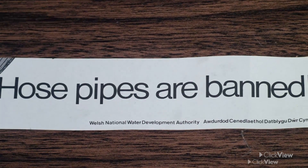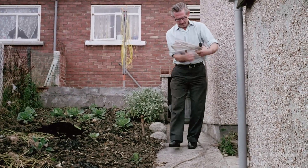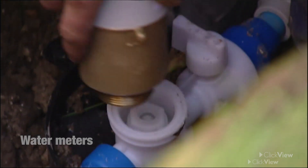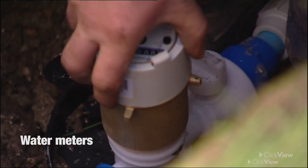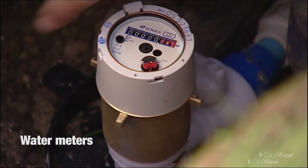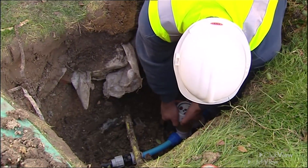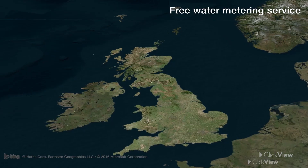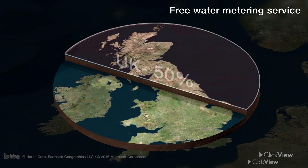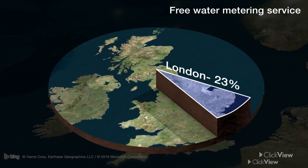Hosepipe bans have been used during periods of exceptionally low rainfall. It is difficult to tell how effective water restrictions are in the UK because they cannot be enforced, but it is always important to use water wisely. Reduction of domestic water consumption has also been achieved through metering, including offering free meters to London residents, though only about half the UK population uses them and only about 23% of Londoners.